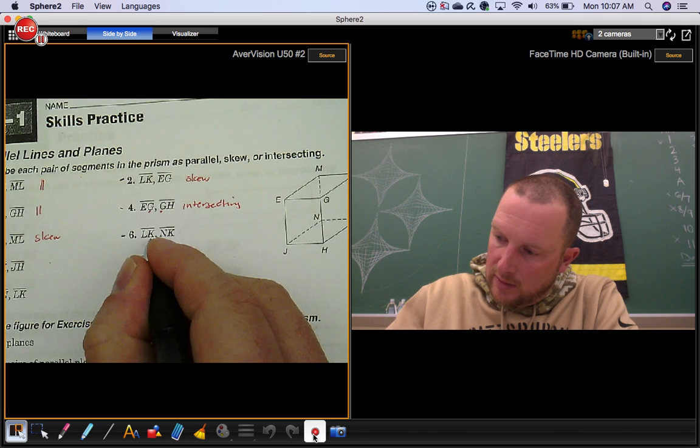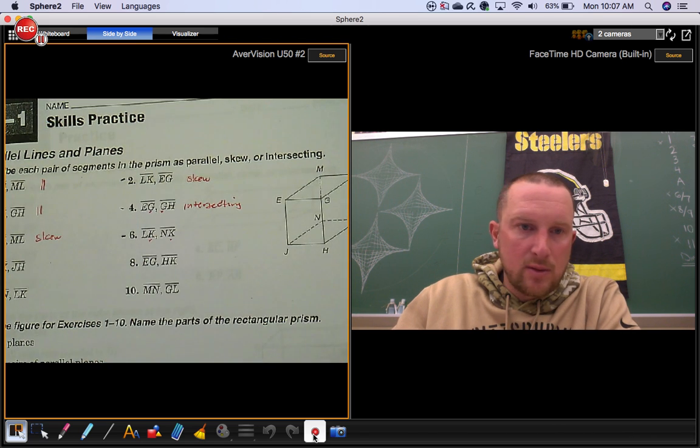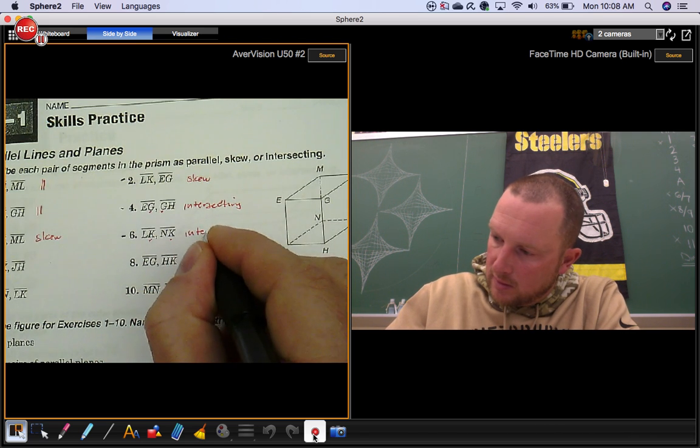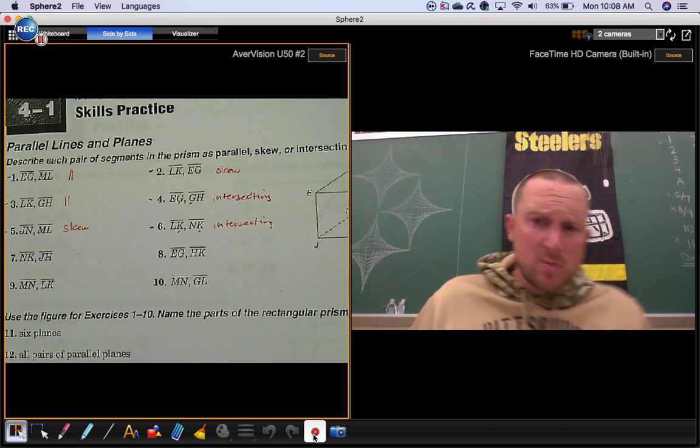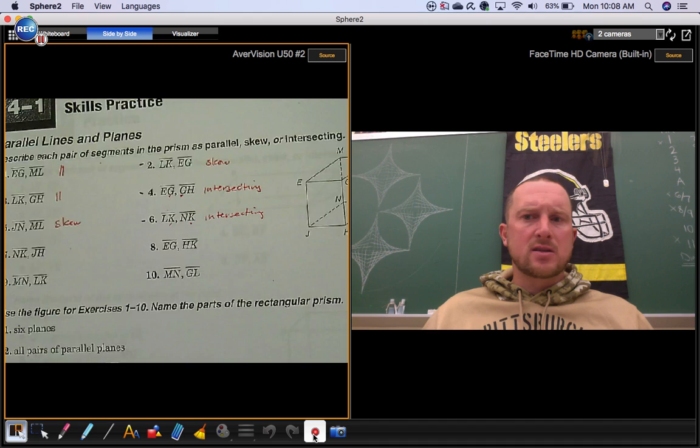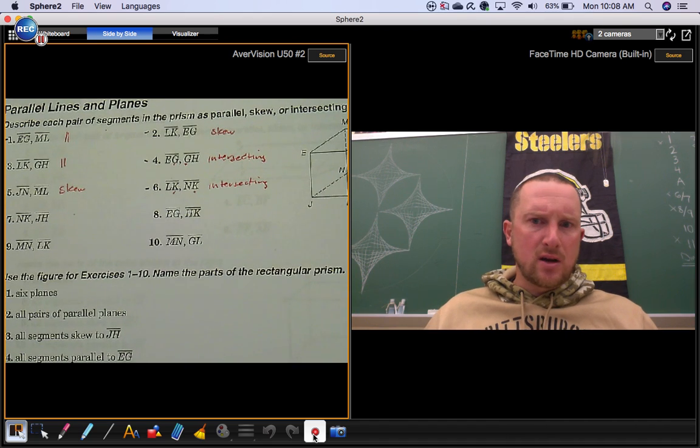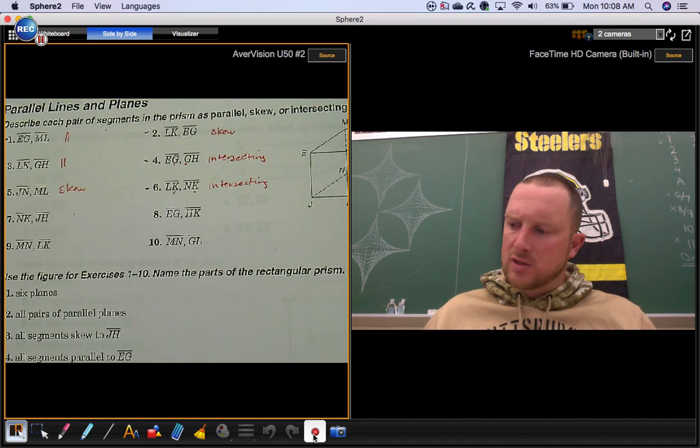Number six, I don't even need a picture. I can tell they both have a K, so that's intersecting. Okay, so there'll be a small section like this on your test, just identifying the pairs of segments, parallel, skew, intersecting.